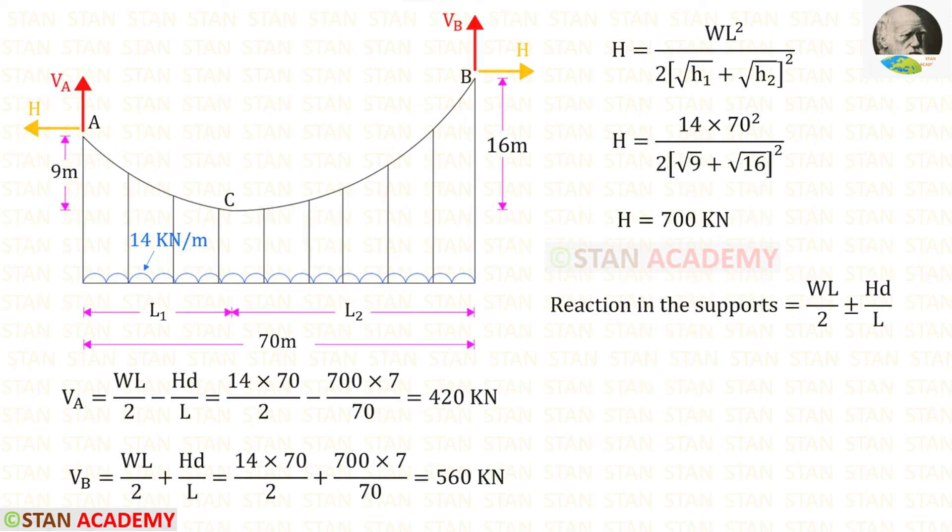Alternatively using the formulas we can find the horizontal thrust and the vertical reactions. This is the formula to find the horizontal thrust. W is 14, L is 70, H1 is 9 and H2 is 16. Finally for H we will get 700 kN.